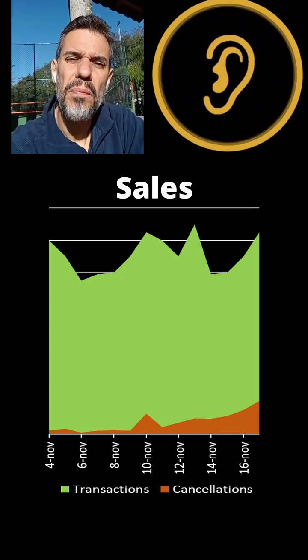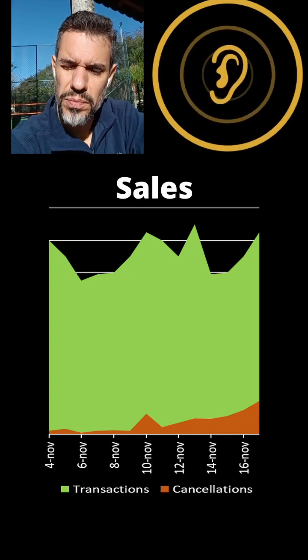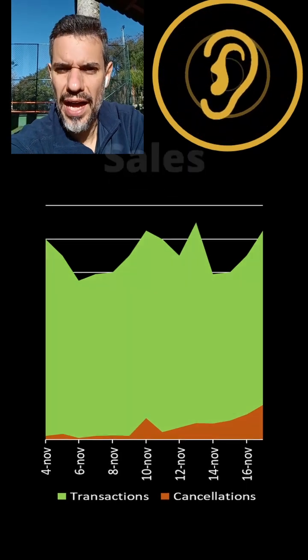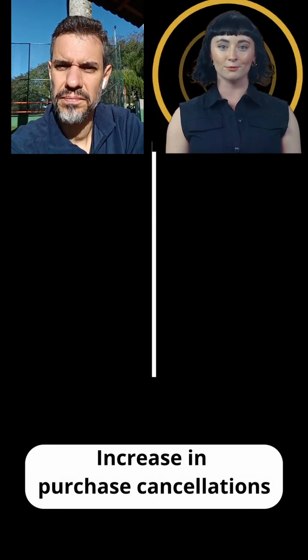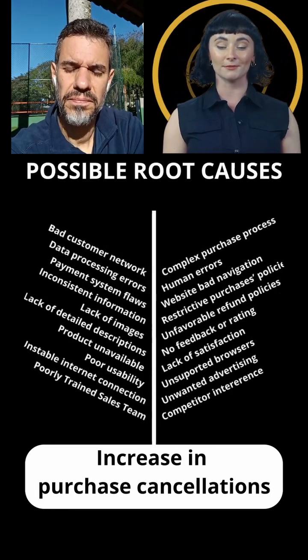Shall we map the possible root causes of this problem in a fishbone diagram? Here are the possible root causes in a fishbone diagram.